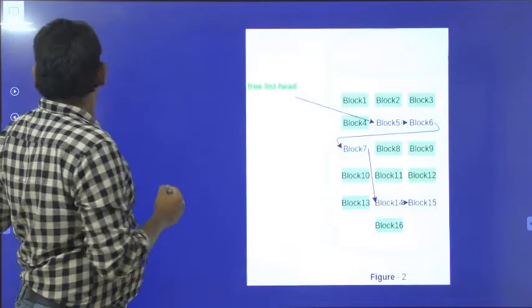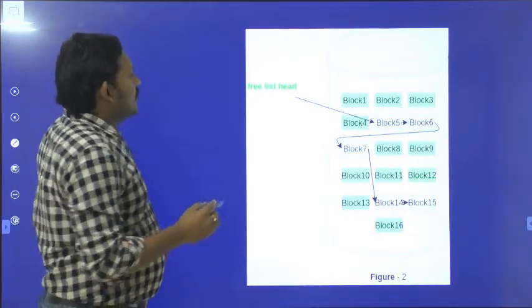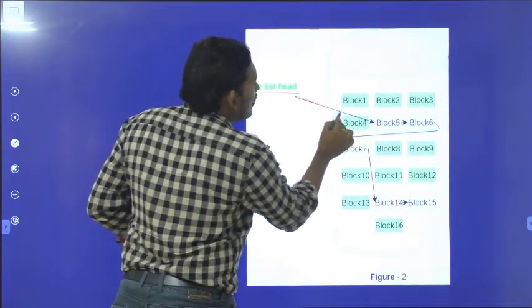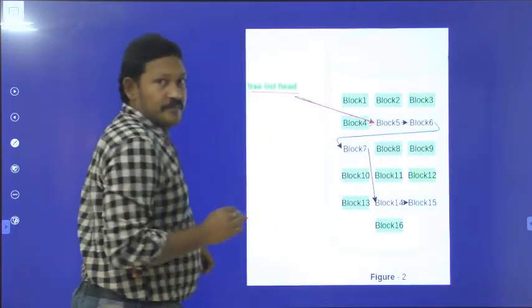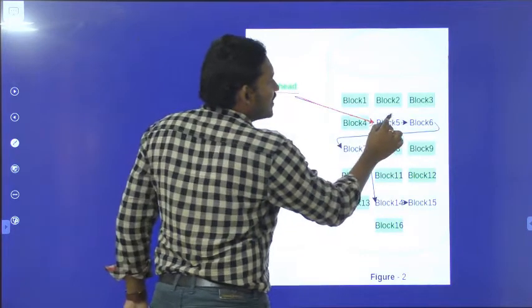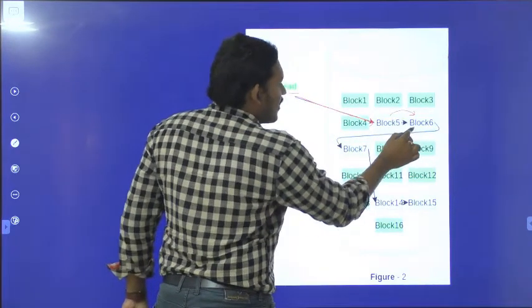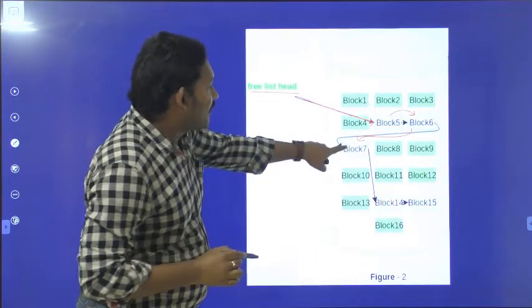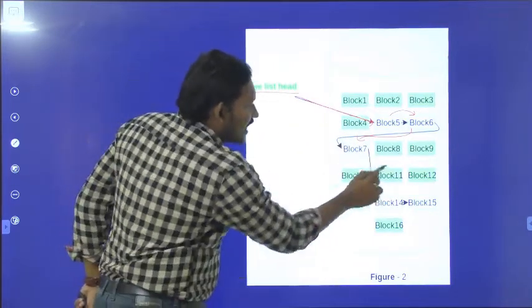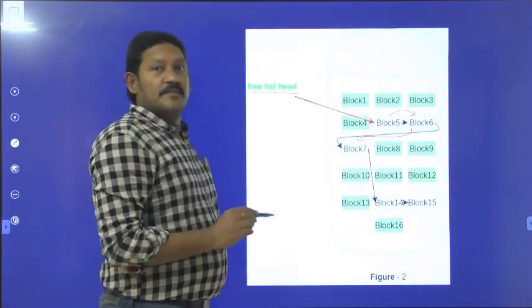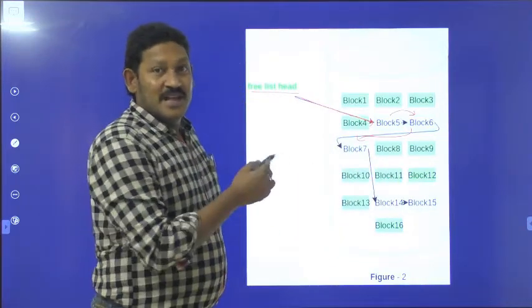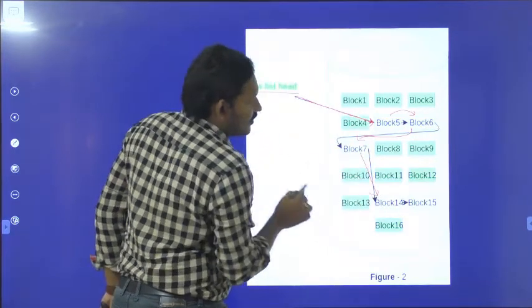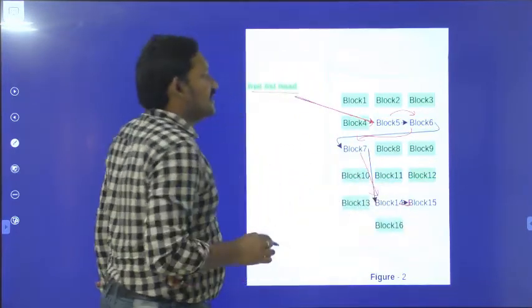See here, if you see here, the free list is headed into Block 5. So from block 5 it is pointed to block 6. From block 6 it is pointed to block 7, because block 5, 6, 7 are empty. After 7, blocks 8, 9, 10, 11, 12, 13, all these are already filled, they are assigned. So next, block 14 is empty. So from 7 to block 14, from block 14 to block 15.